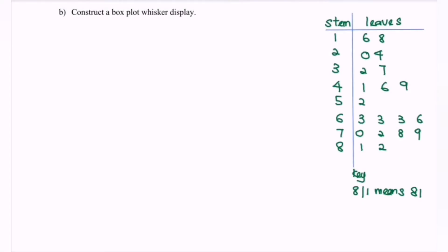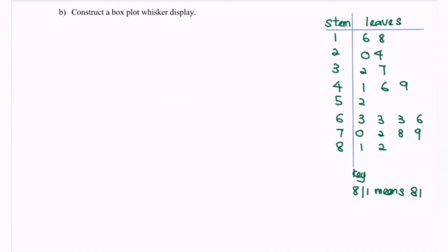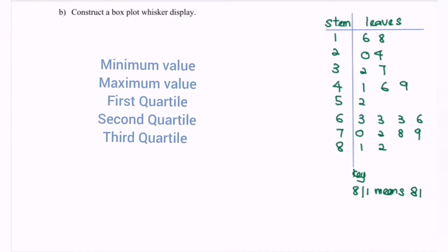Next, we are going to focus on how to construct the box-and-whisker plot. Number one, we must have the five-number summary, which consists of minimum value, maximum value, the first quartile, second quartile or the median, and the third quartile.